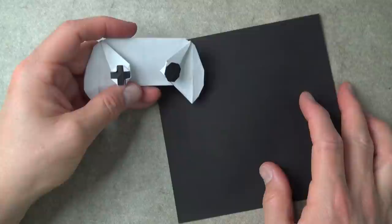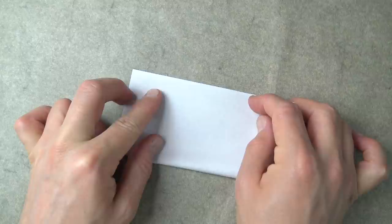For the game controller, begin colored side up and fold in half. Try to make really precise folds and crease sharply.